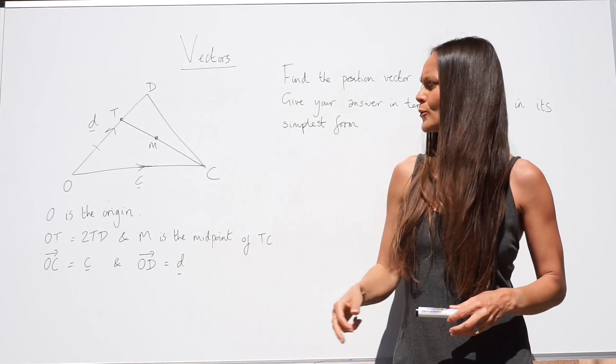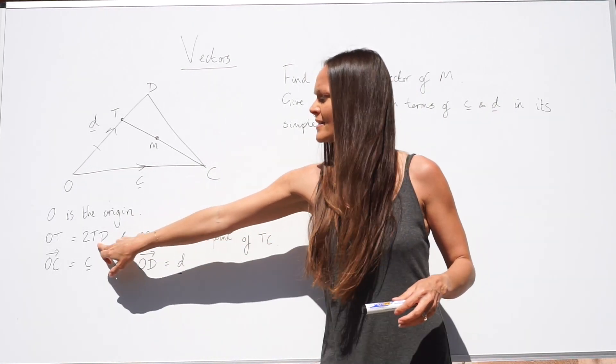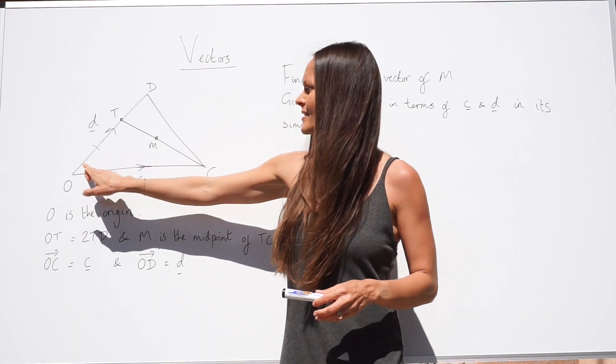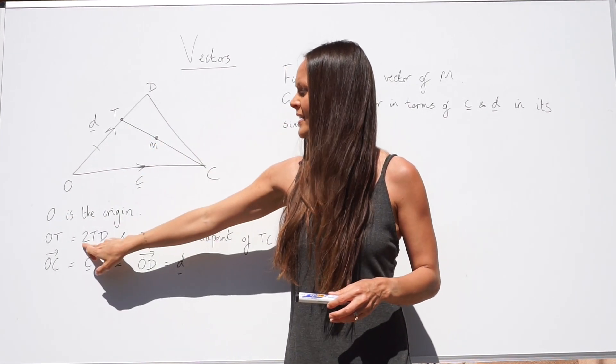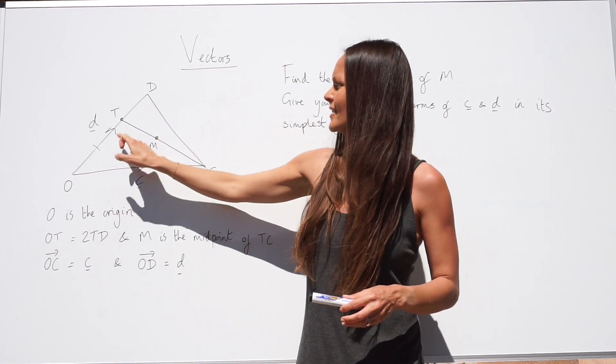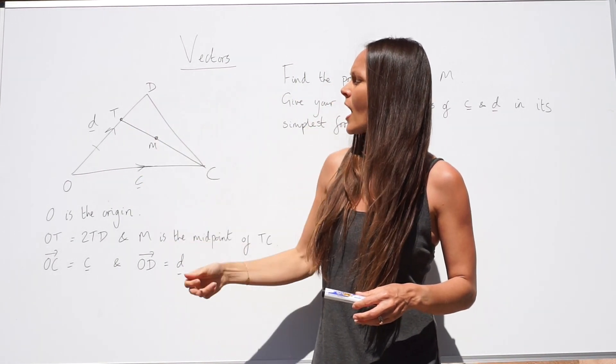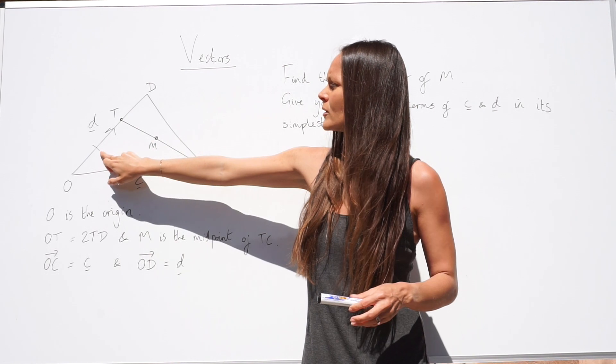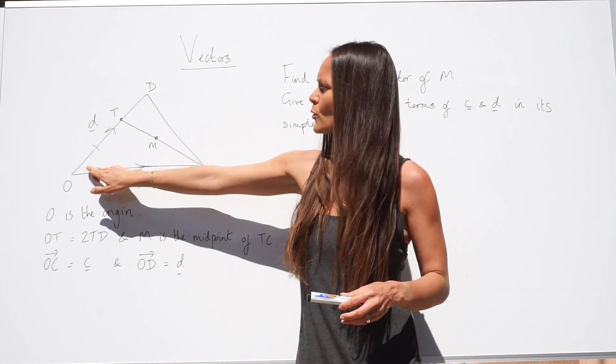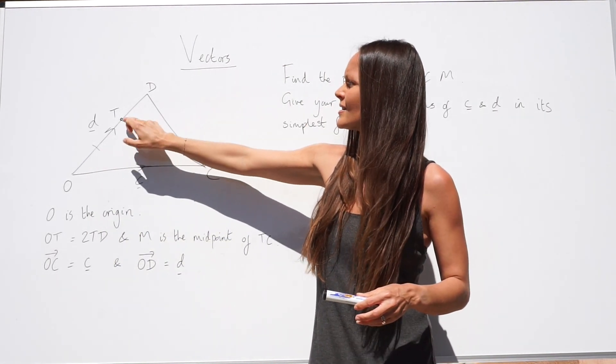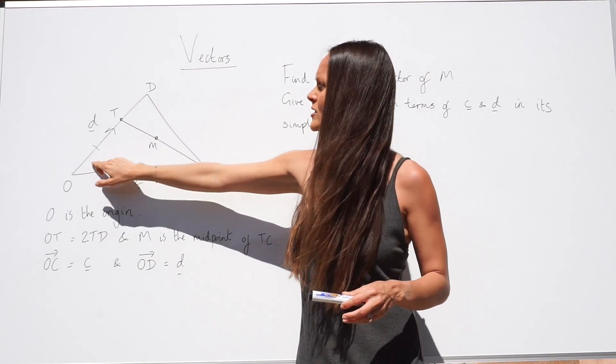OT is equal to 2TD. That just means the length of the line OT, so here, is twice the length of TD, so this part here. So it's double the distance. I've just drawn a line along here to show that this is two parts and this is one part, so it's double the distance.